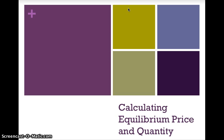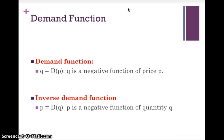This video looks at calculating equilibrium price and quantity using demand and supply functions. A demand function can be written in one of two ways: we can have the demand function where quantity is the subject of the formula, meaning quantity is a negative function of price. With the inverse demand function, price is the subject of the formula and price is a negative function of quantity. Both represent the law of demand — a negative relationship between price and quantity.